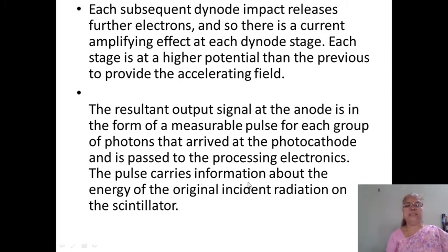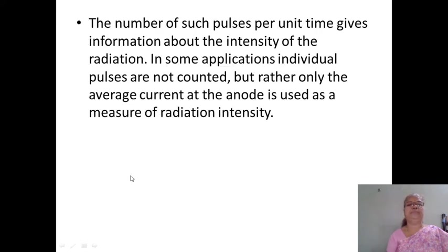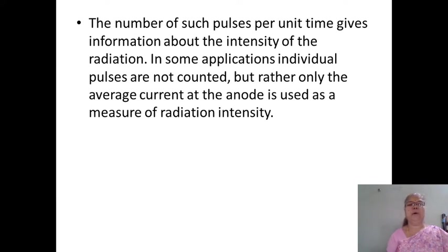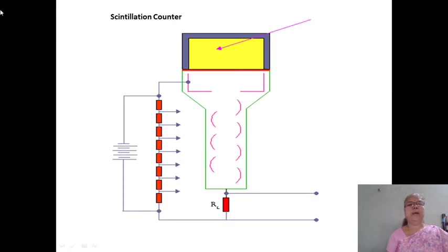For each group of photons that arrives at the photocathode, the pulse carries information about the energy of the original incident radiation on the scintillator. The number of such pulses per unit time gives information about the intensity of the radiation. In some applications, individual pulses are not counted; rather, only the average current at the anode is used as a measure of radiation intensity.